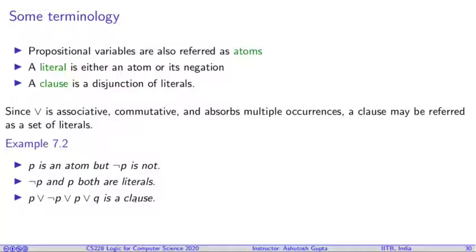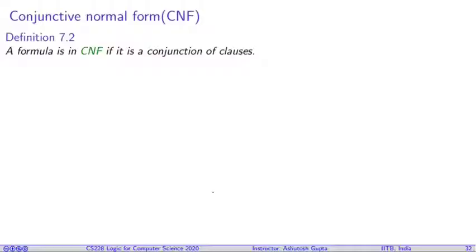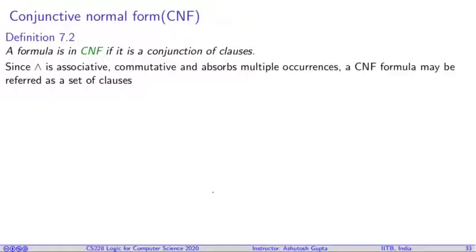A clause is disjunction of literals. Since disjunction is associative, commutative, and absorbs multiple occurrences, a clause may be referred as set of literals. Writing a clause as a set has same meaning. A CNF formula is a conjunction of clauses. Since conjunction is also associative, commutative, and absorbs multiple occurrences, a CNF formula may be referred as a set of clauses.